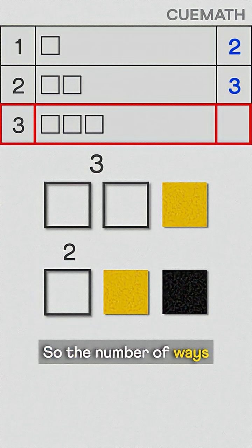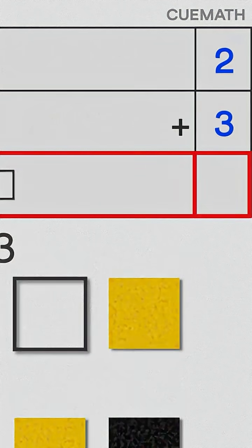So the number of ways to paint three tiles is the sum of the ways to paint two tiles and one tile. That's five.